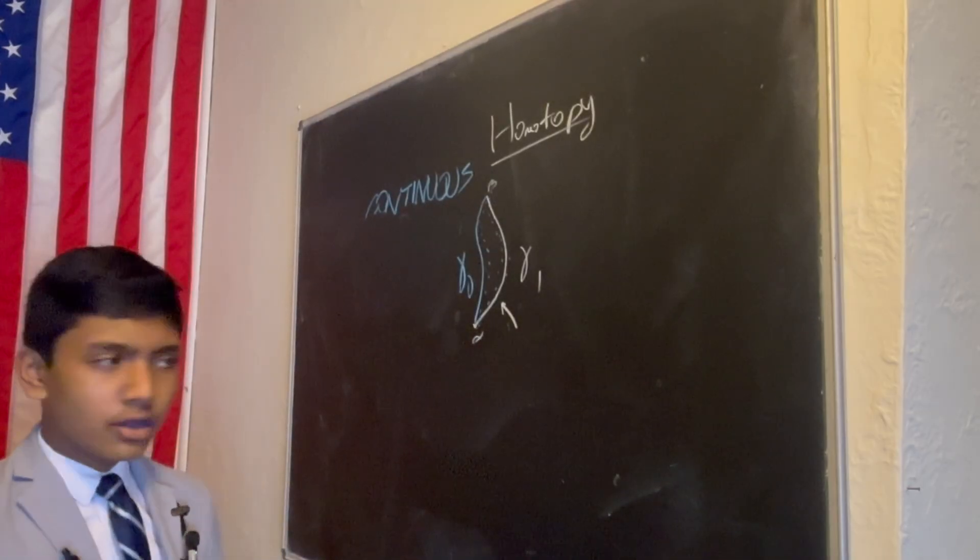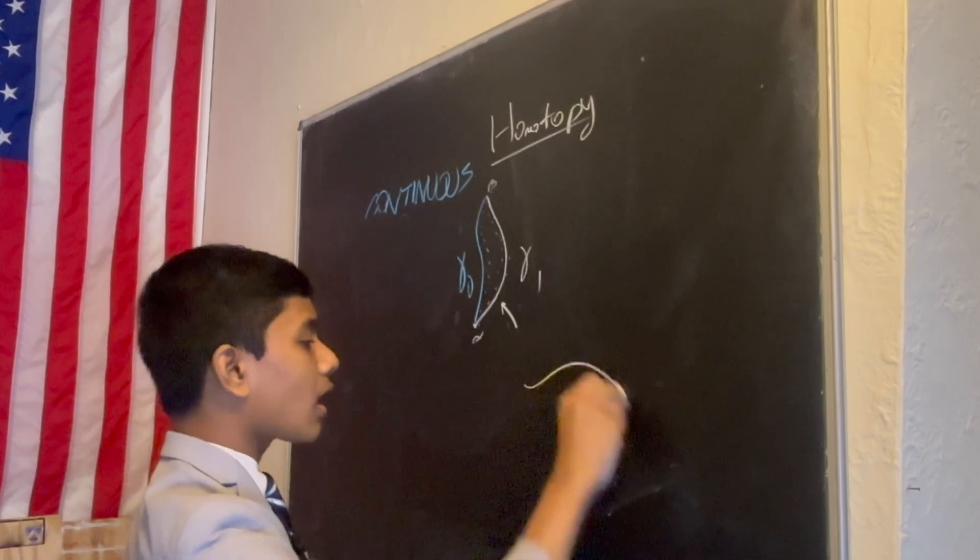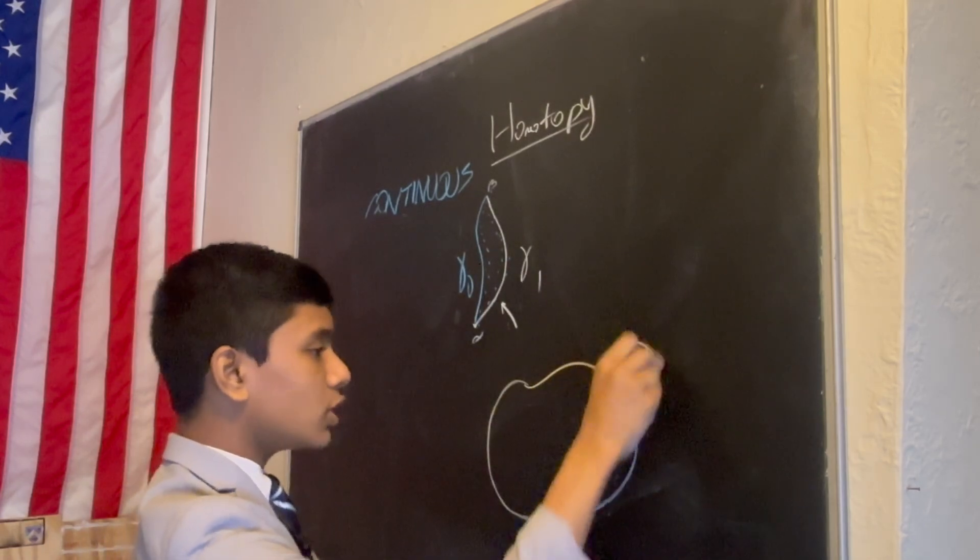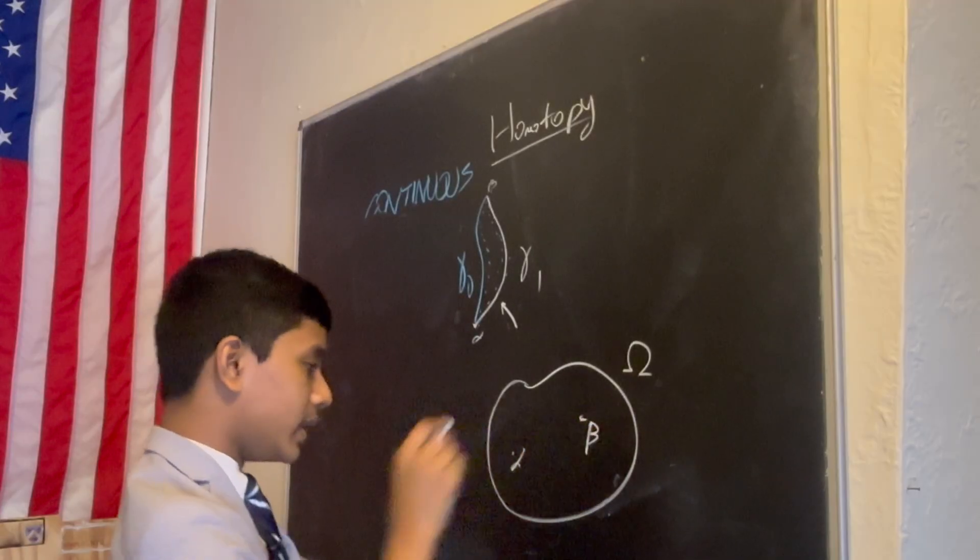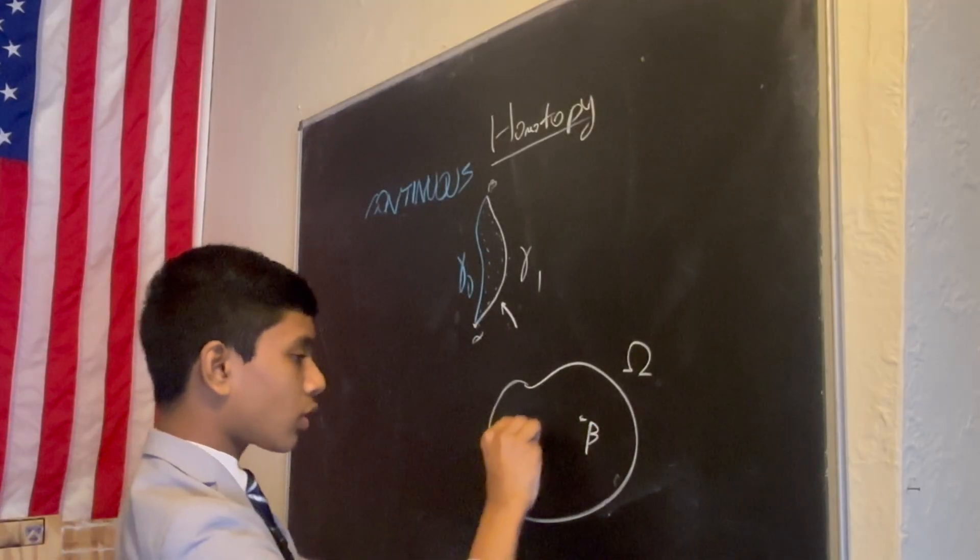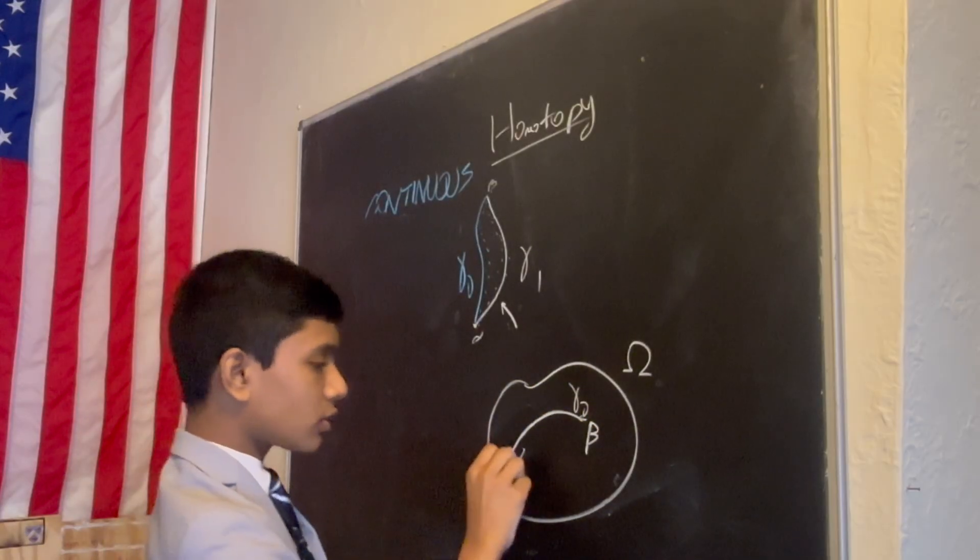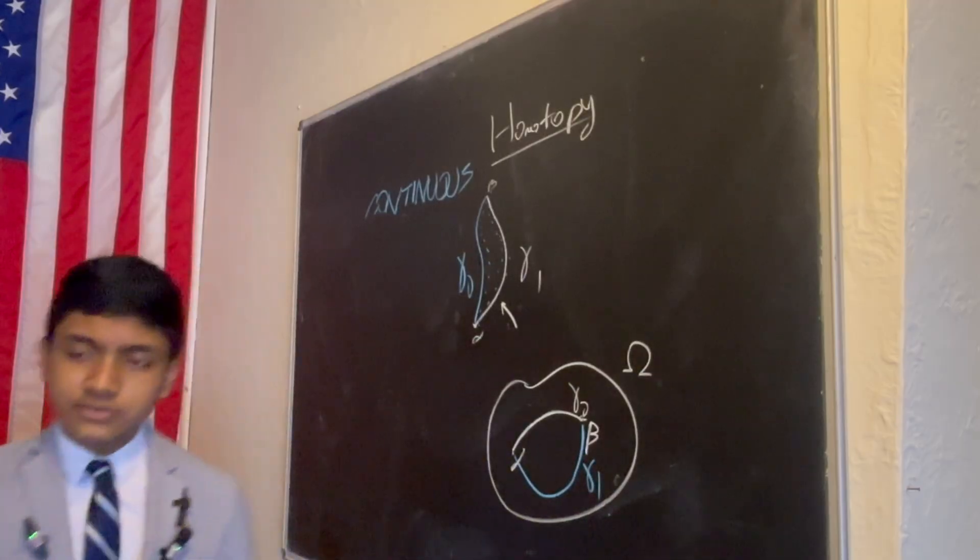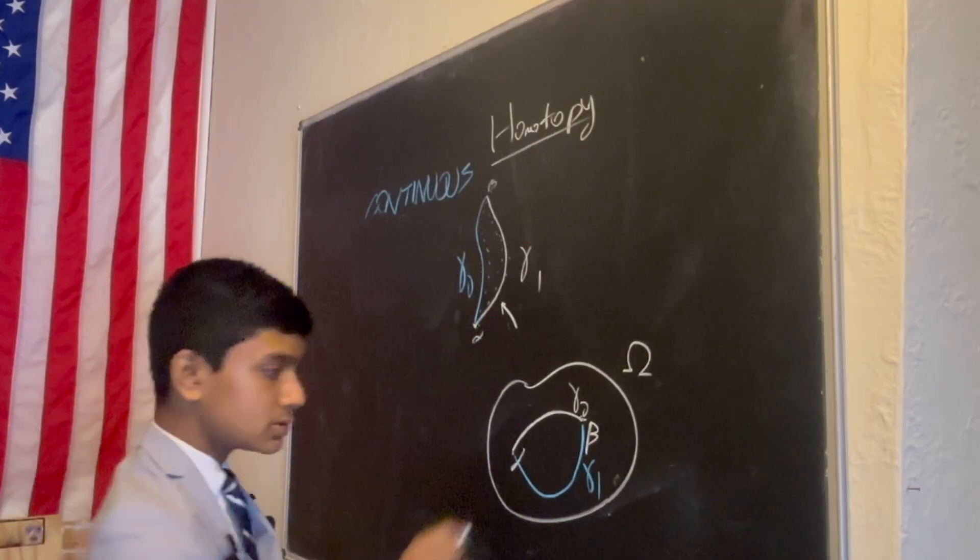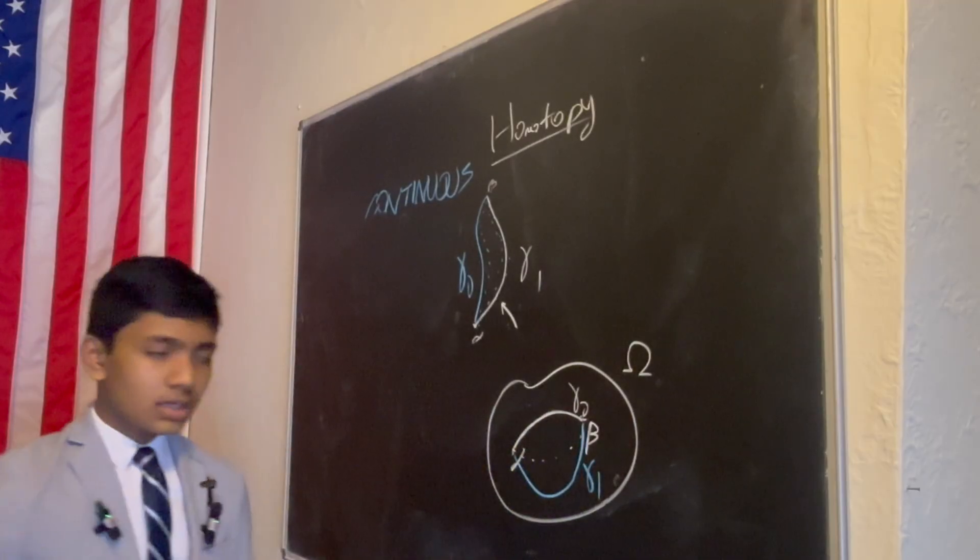So, what does the intuitive logic look like? Well, say we have a domain, two points alpha and beta, curve gamma naught, and curve gamma 1. And, of course, there are a bunch of curves that live in between.